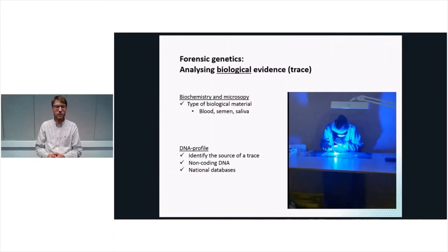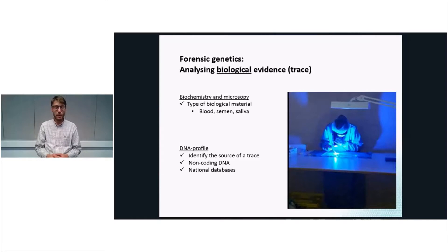In the field of forensic genetics we do analysis of biological evidence. This can for instance be trace evidence left at the crime scene. We do a biochemical characterization and also microscopic investigation of the samples to characterize what kind of material is in the stain — is it blood, is it semen, or is it saliva? The next step is to prepare a DNA profile from that sample, given that it actually contains DNA. The DNA profile is used to identify the possible source of the stain. This profile represents variable non-coding parts of the DNA and is used to compare to profiles either from specific suspects or to search in national or even international DNA databases.